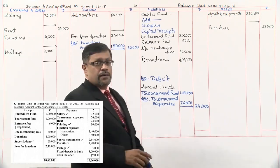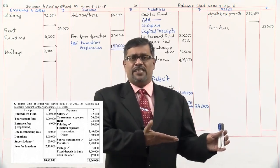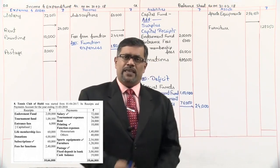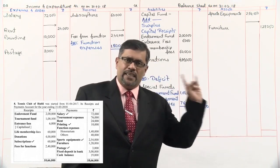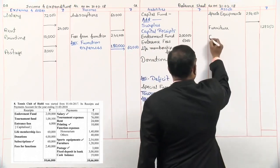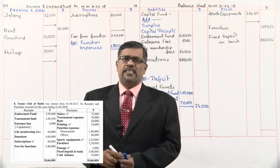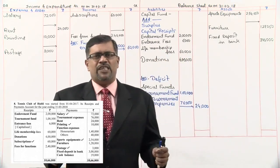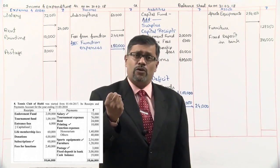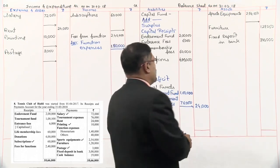After postage, fixed deposit — cash deposited in the bank in a fixed deposit account, which is nothing but an investment. Investment is our asset, so it goes in the balance sheet — 3 lakh rupees. The last item on the payment side is cash balance — cash in hand, which is always an asset in the balance sheet — 19,000 rupees.